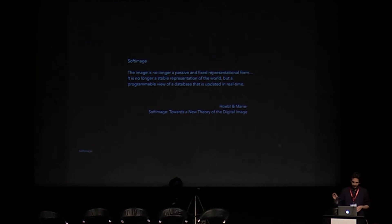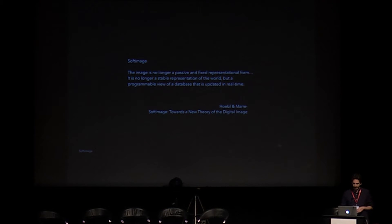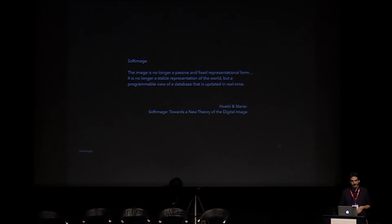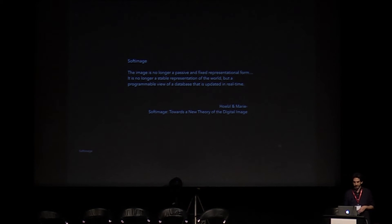These images are compiled of data and software — they are soft images. The image is no longer a passive and fixed representational form. It is no longer a stable representation of the world, but a programmable view of a database that is updated in real time. My question is: these images, when combined with a VR headset and optical tracker, can react to an observer's bodily movements and attention. So what are the creative potentials of embedding code into objects, spaces, and a first-person perception?